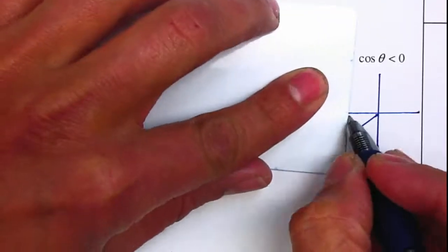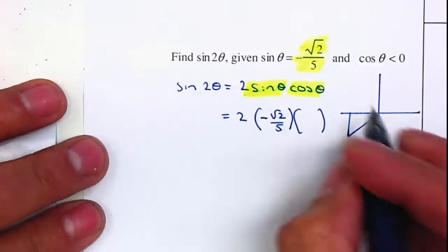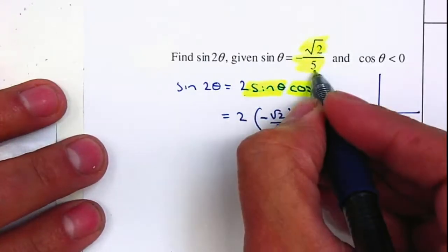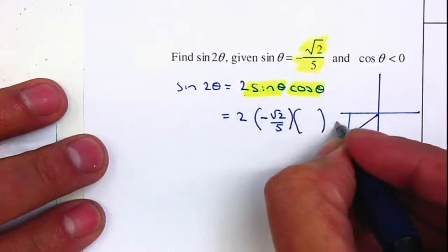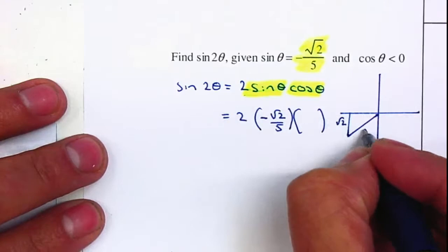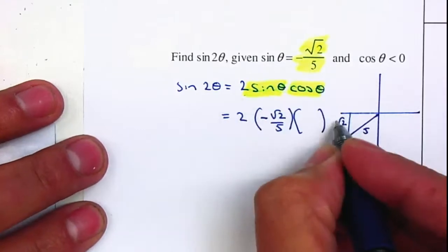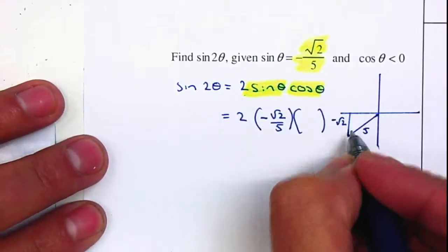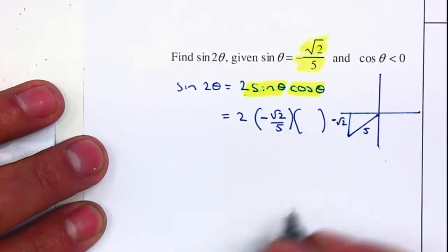I'm going to place a generic triangle. This is opposite over hypotenuse, so it will be square root of 2 over 5. And the negative belongs to the square root of 2 because it's going down. Now I'm going to find the missing side.